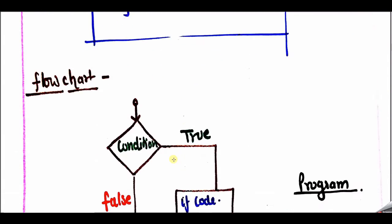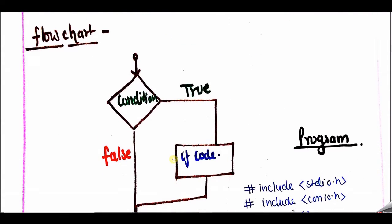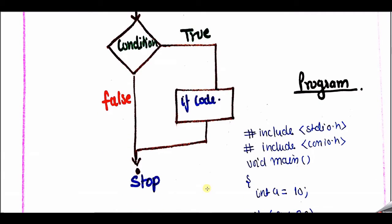Now working of this — we can see with the help of a simple flowchart again. If the condition is given, we go through the if code, that means the if scope area. And when the condition is false, we don't perform anything — we just follow the next part after the if code.